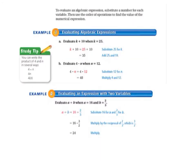Now we're going to move on to evaluating algebraic expressions. And when we evaluate an algebraic expression, we substitute a number for each variable. Then we use the order of operations to find the value of the numerical expression. So let's look at example 3, evaluating algebraic expressions.